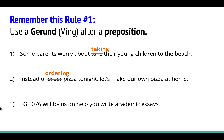Number three: find the preposition and change the verb after it. The preposition is 'on,' and we need to change 'help' to 'helping.' This is a very important rule that will really help the clarity of your writing. Many students don't learn this rule until much later. Try to always remember: if you use a verb after a preposition, change it to a gerund.